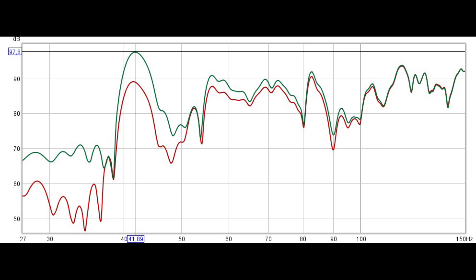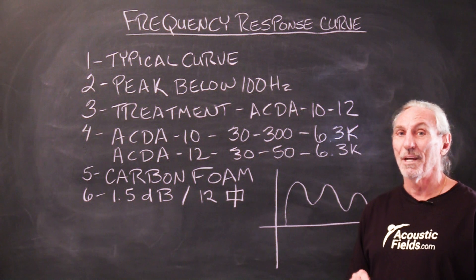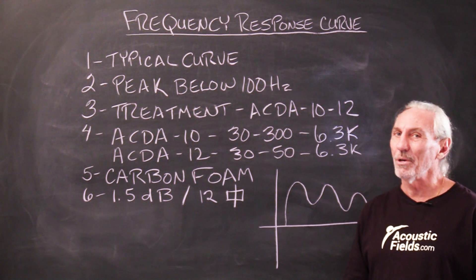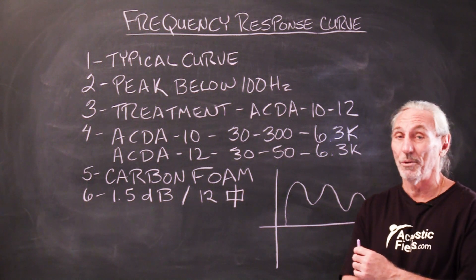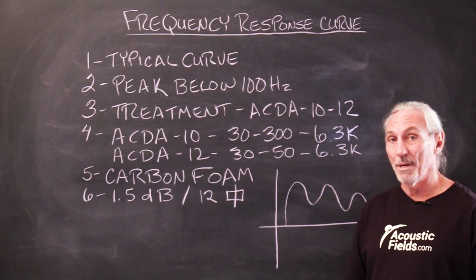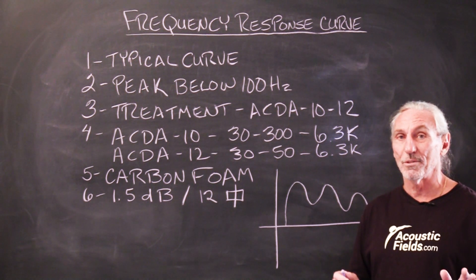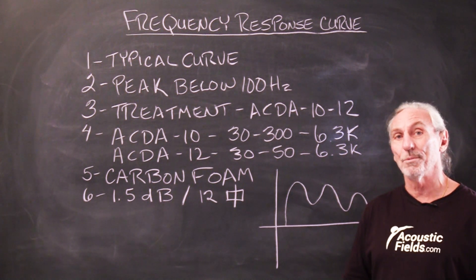That's why we call all energy below 100 cycles low frequency. It's also the hardest to treat. Anything above 100 we can treat pretty easily, but anything below requires special treatment as you all know. There's many products in the marketplace that claim to be effective down below 100 cycles. Most are not. Most are boxes filled with building insulation.